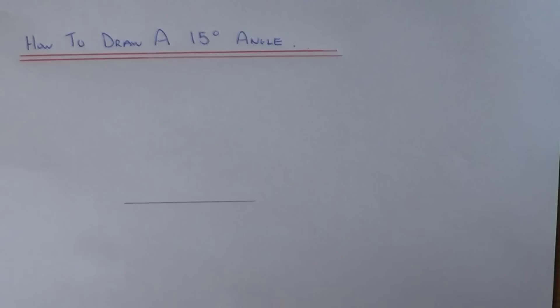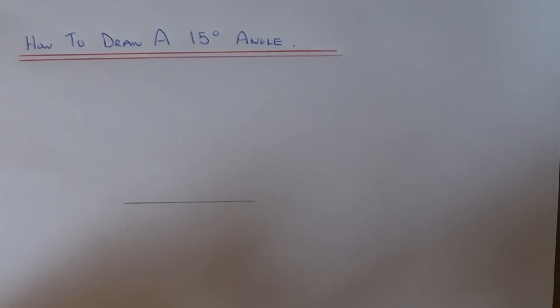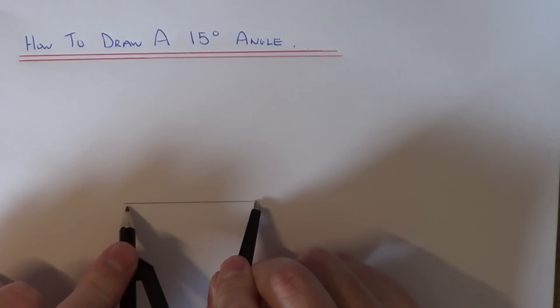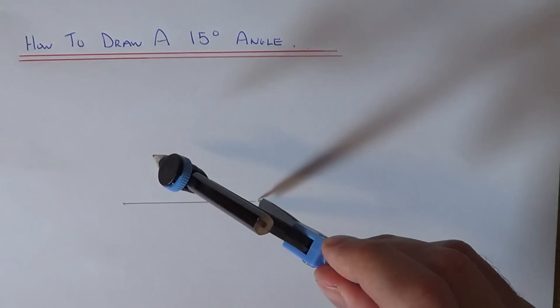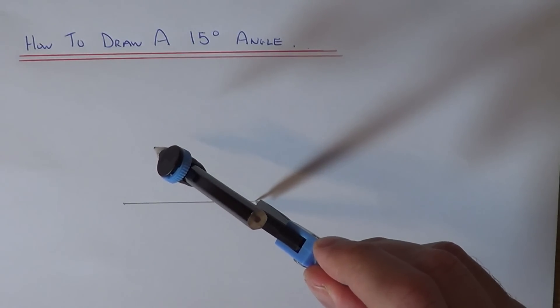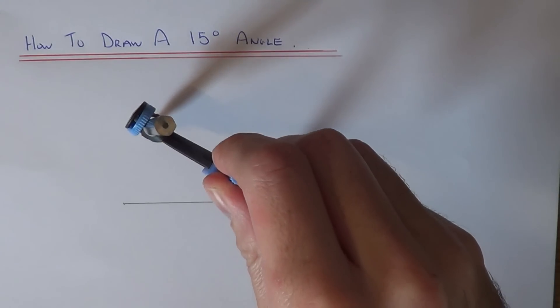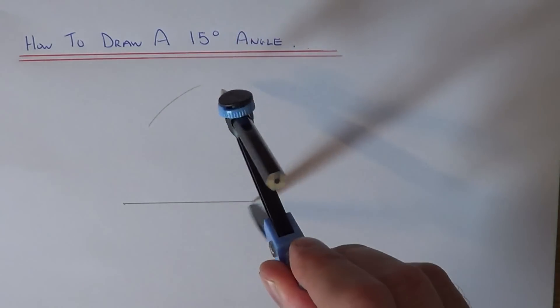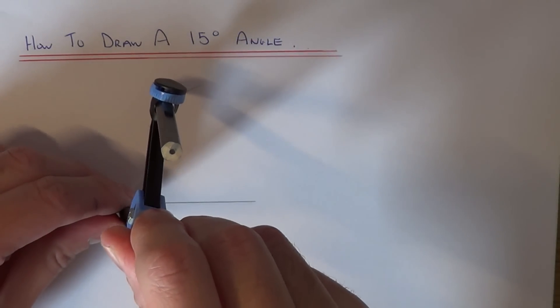The first thing I'm going to do is make a 60 degree angle with a compass. Open your compass to the full length of the line and put the compass point on the right hand side. Do an arc at the top here, and do the same from the other side of the line.